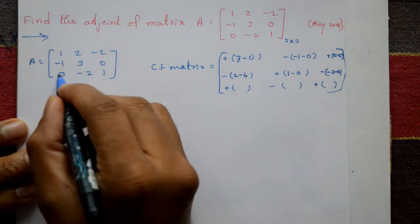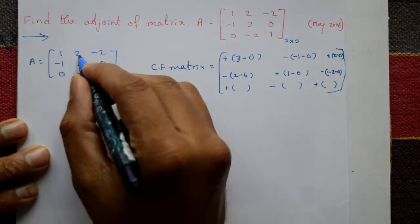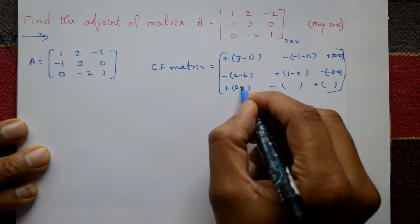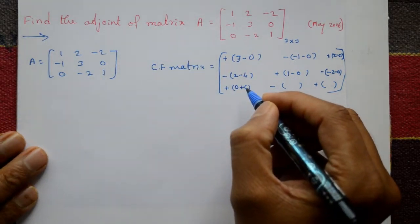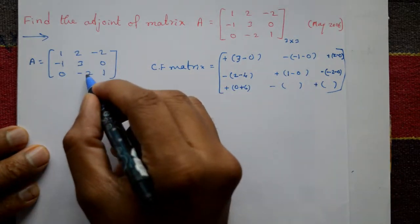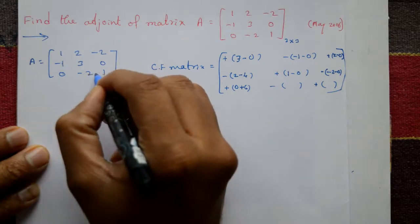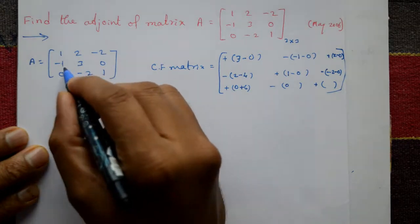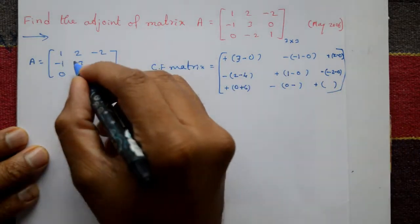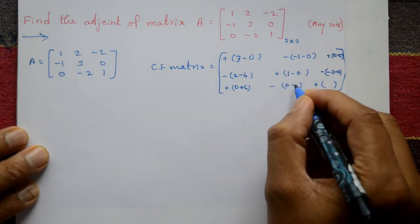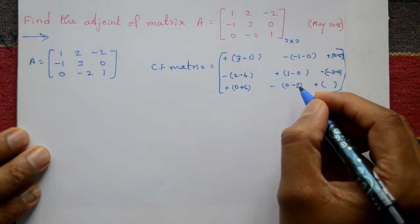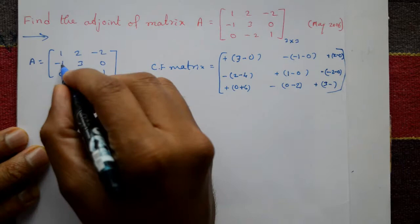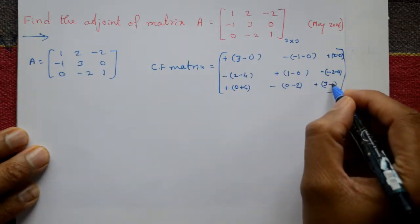Next last row. Cofactor of 0: first row, third column, remaining elements — 2 into 0 is 0, minus sign, 3 into 2 is minus 6, minus minus gives plus 6. Next, cofactor of minus 2: third row, second column, remaining elements — 1 into 0 is 0, minus sign, minus 1 into minus 2 is plus 2, so minus 2. Cofactor of 1: 1 into 3 is 3, minus sign, minus 1 into 2 is minus 2, and minus sign gives plus 2.